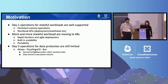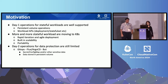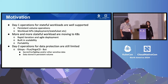On the other hand, day two operations for stateful workloads, such as data protection, are still limited. GitOps workflows have limited support for data protection — secrets, config maps, and data stored in persistent volumes are not stored in Git. So when we find a better way to support data protection in Kubernetes, that's why we established this working group back in 2020.